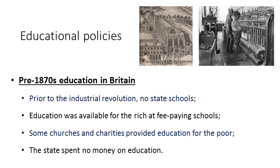Prior to the 1870s, the vast majority of people who lived in the United Kingdom were uneducated. Prior to the Industrial Revolution, there were no state schools — the state did not provide any form of education. Education was available for the rich and powerful, the landed aristocracy and royalty, who sent their children to fee-paying schools. Some churches and charities provided education for the poor, but you needed to be very lucky to live nearby. Most people would have learnt some very basic literacy and numeracy from their parents or grandparents, but very few were able to even write their own name.